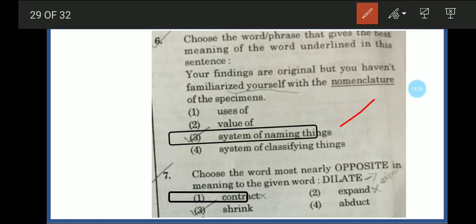Next question: Choose the word most nearly opposite in meaning to the given word. Dilate means to expand or spread out. Contract means to bind or make smaller, shrink means to reduce, expand means to spread, abduct means to kidnap. The opposite of dilate is contract.